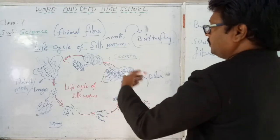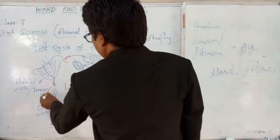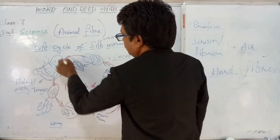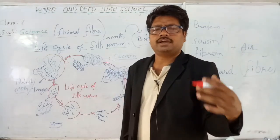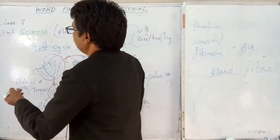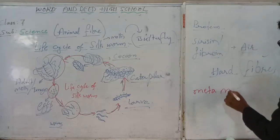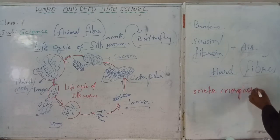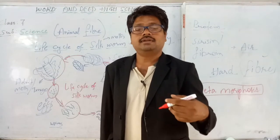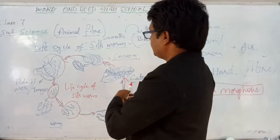This is the life cycle of silkworm. First eggs, then eggs hatch and worms come out, worms develop into larva, larva develops into caterpillar, then cocoon, then adult butterfly. There are different forms in its life cycle, and this kind of life cycle is called metamorphosis — it is a process of life cycle with different forms of life: eggs, worms, caterpillar, cocoon, and adult.